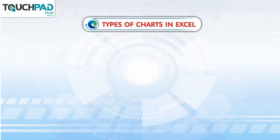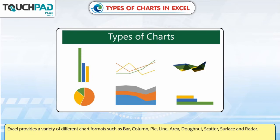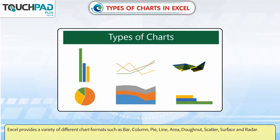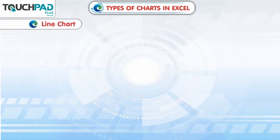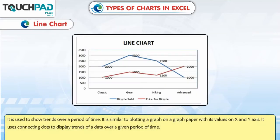Types of Charts in Excel: Excel provides a variety of different chart formats such as bar, column, pie, line, area, donut, scatter, surface and radar. Line chart: It is used to show trends over a period of time.